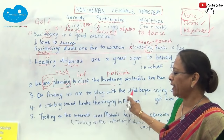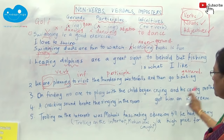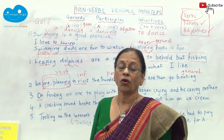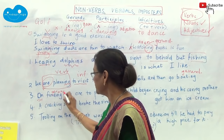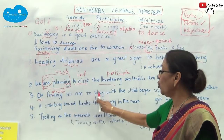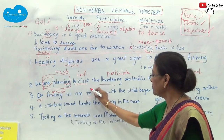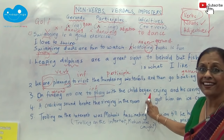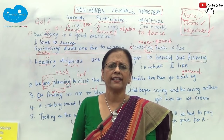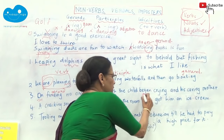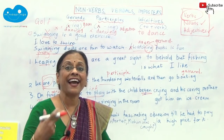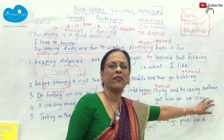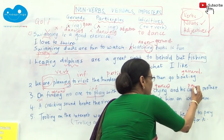'On finding no one to play with, the child began crying and his caring mother got him an ice cream.' On finding — can you see this preposition? The object of a preposition is always a noun, so straight away this is a gerund. 'To play' — infinitive. 'The child began crying' — 'began' is the verb, not a helping verb. 'Crying' — it's the act of crying, therefore it's a gerund. 'His caring mother' — 'mother' is the noun, therefore 'caring' is an adjective — a participle.